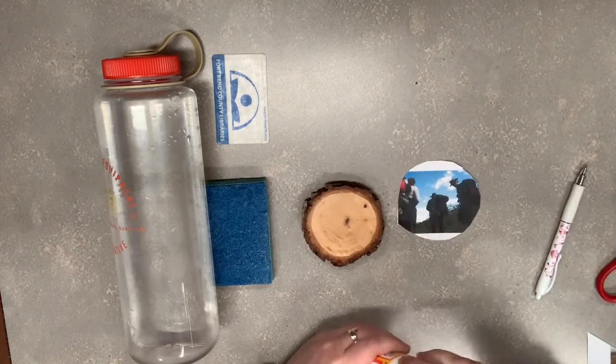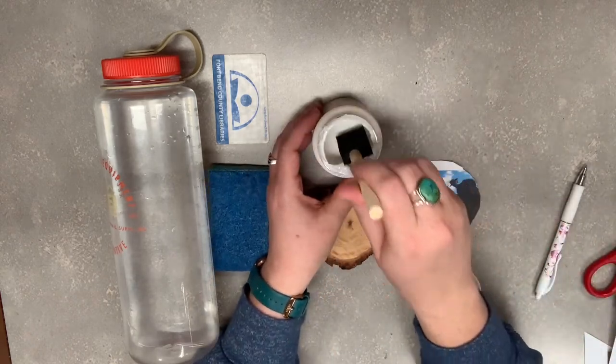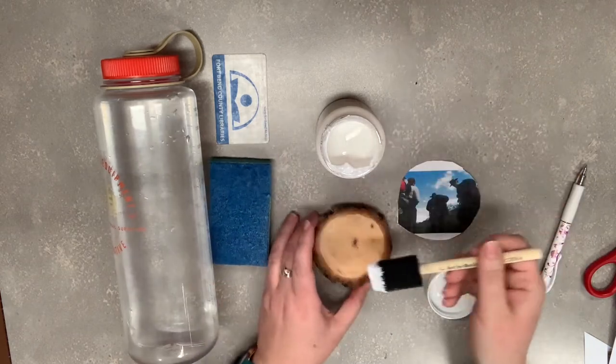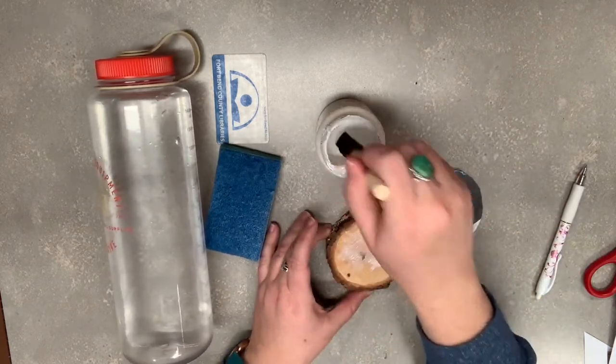And now we're going to take our glue, the Mod Podge, and open that and get some out with the brush. And I like to coat it on the surface of the wood. And it needs to be a thick coat.